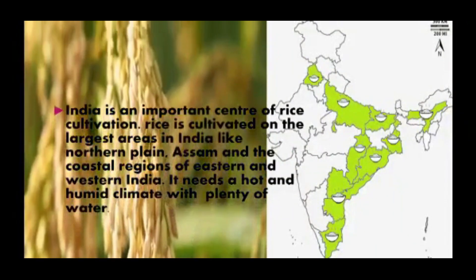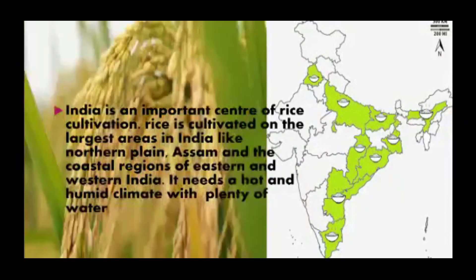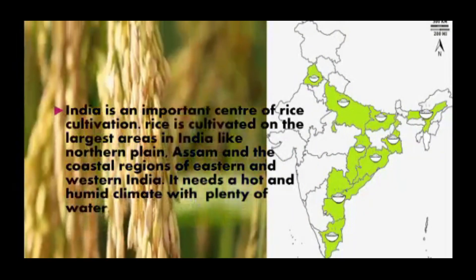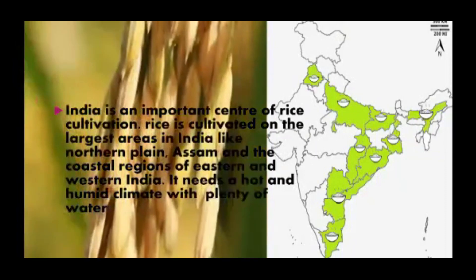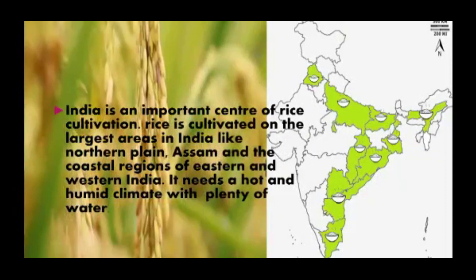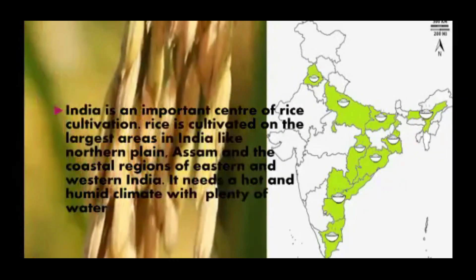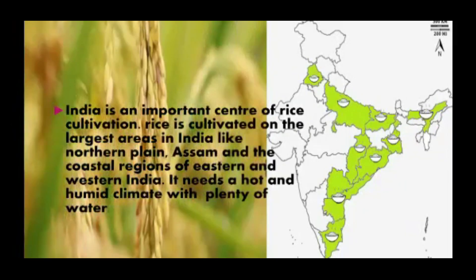Rice is cultivated over the largest area in India, including the northern plains and the coastal regions of eastern and western India. It needs a hot and humid climate with plenty of water.